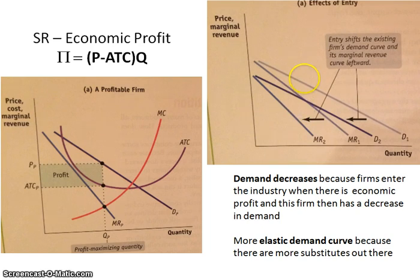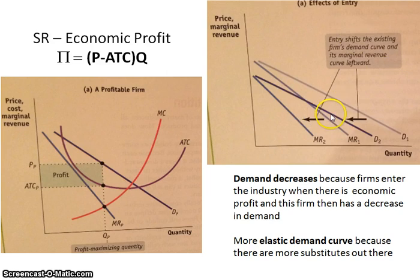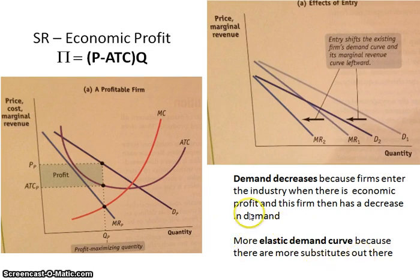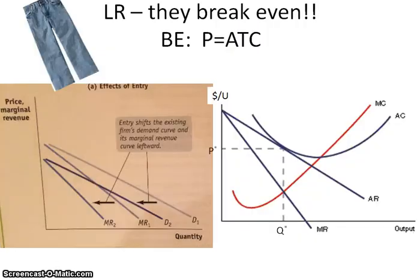When more firms enter, the demand curve for this firm shifts to the left — it decreases — because consumers now have other places to buy. There's a reduction in the amount of consumers willing and able to buy this firm's product. This decrease in demand also means a decrease in the marginal revenue curve. Additionally, more firms mean more substitutes are available, so the demand curve not only shifts left but becomes a little flatter, meaning more elastic. As a result of this ease of entry, the monopolistically competitive firm will break even in the long run.